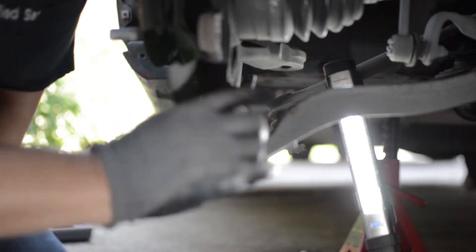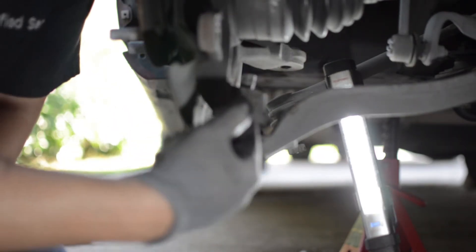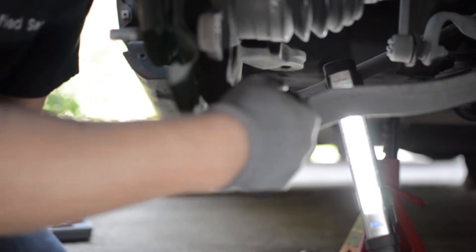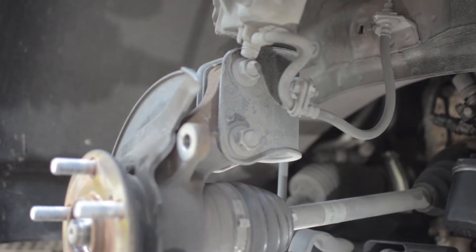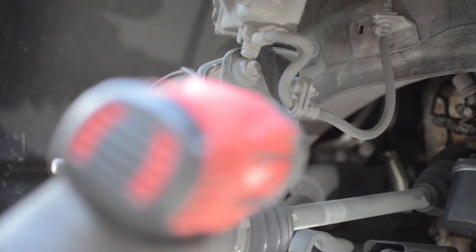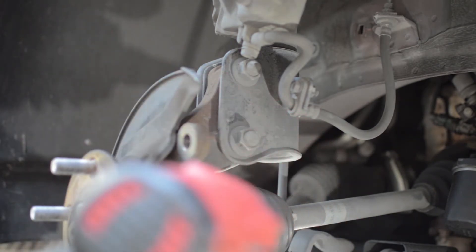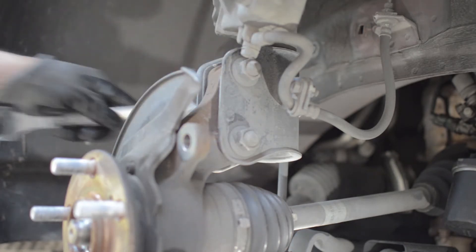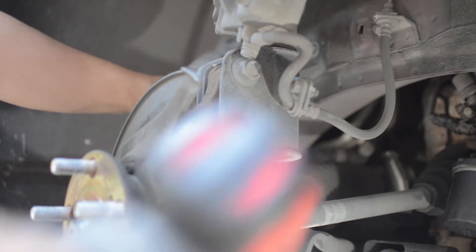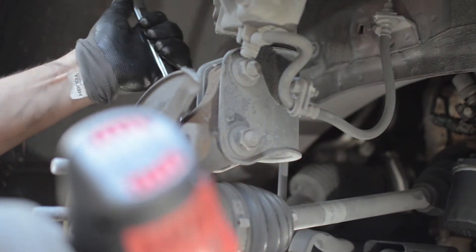Now we're removing the bolts that secure the strut to the axle. We're using a 22mm socket and wrench. A good rule of thumb: if possible, always use your impact gun on the nut side. It'll make it easier.